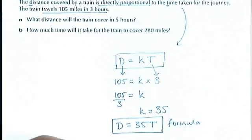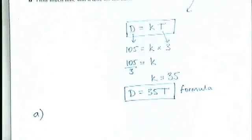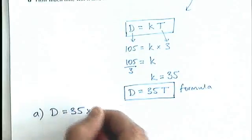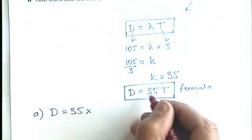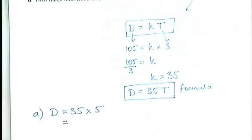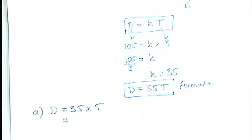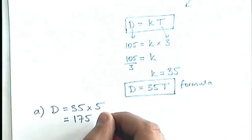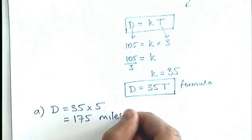So now we can go and answer part a. Part a says what distance will the train cover in five hours? So we go back to the formula. d is equal to, the distance is 35 times by the time taken, five hours. So you get 35 times 5, which is 175 miles. Don't forget to include your units.